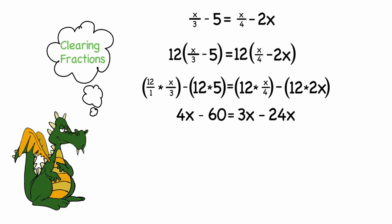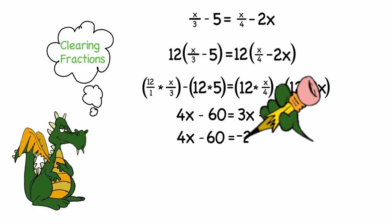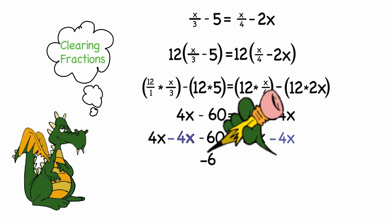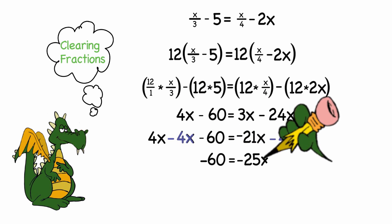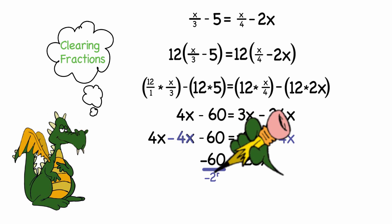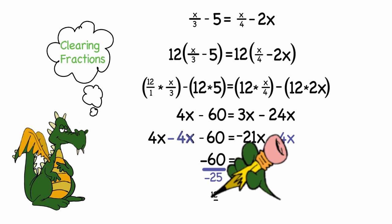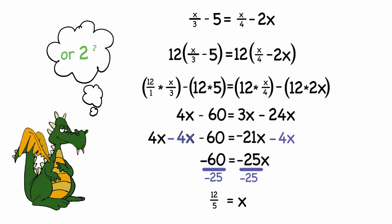Again, I need to simplify the right hand side of the equation to negative 21x, and then I would need to subtract 4x from both sides of the equation, giving me negative 60 is equal to negative 25x. Then I would divide each side by negative 25, and when I reduce that fraction, I get 12 over 5, or 2 and 2 fifths, just like I did before.